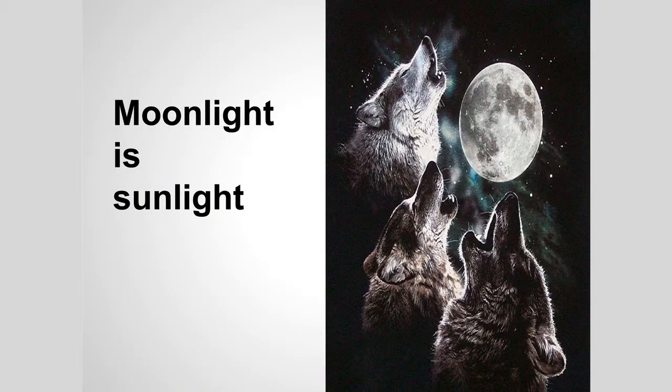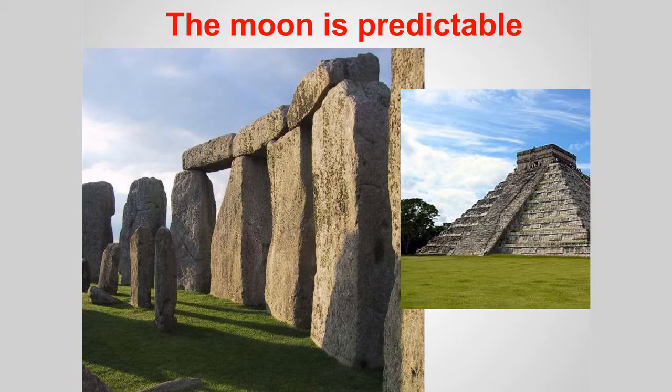The first problem is that scientifically speaking, despite what you might have heard about werewolves, moonlight and sunlight are the same thing. You can't just build a sensor or use your phone camera to detect whether it's the moon or the sun. So that's not a good route. Fortunately, the moon is extremely predictable. Math and all these ancient sculptures were all created to track the sun and the moon and the planets, so it's very predictable — we know what time it is.